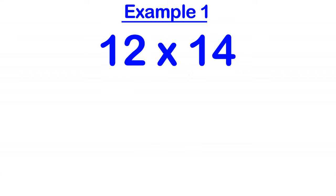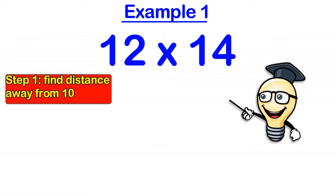Okay, so let's take a look at an example. Let's consider 12 times 14. So step 1, what we do is first of all we find out how far each number is away from 10. So the 12 is 2 digits away from 10 and the 14 is 4 digits away from 10.